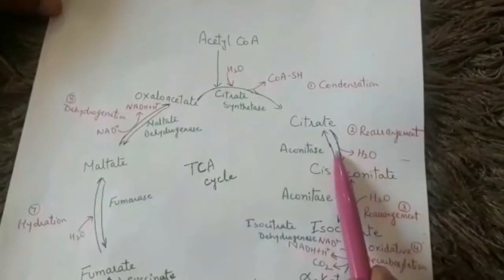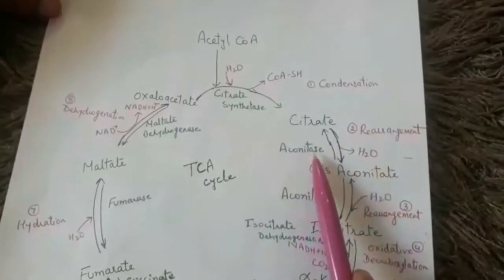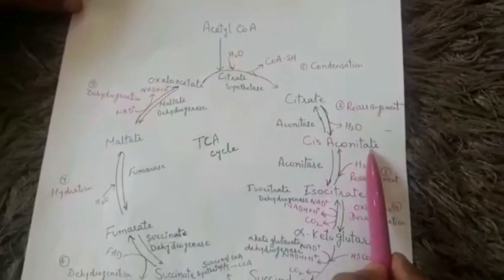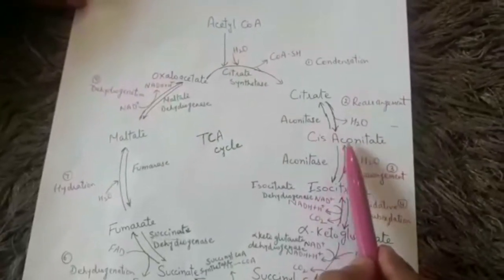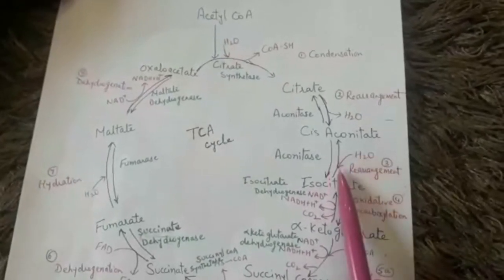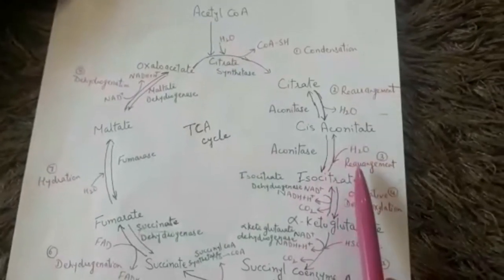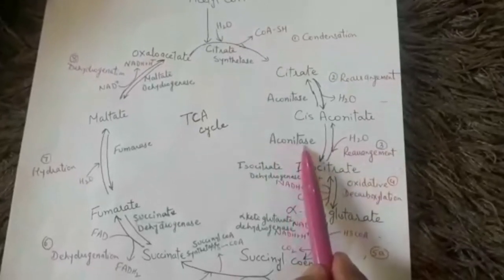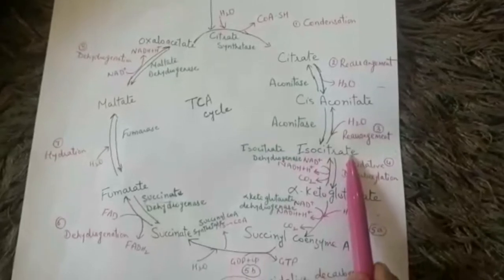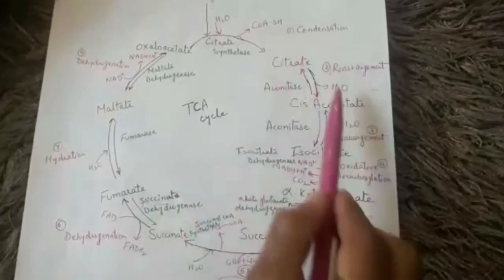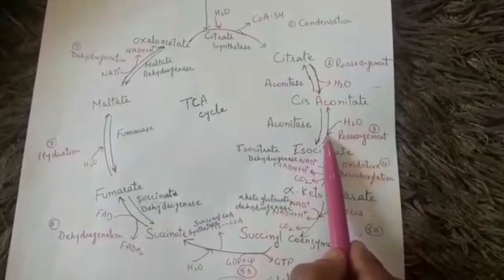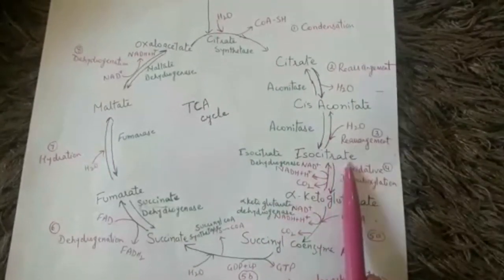The second step is rearrangement. Citrate loses water and undergoes rearrangement of atoms in the presence of the enzyme aconitase to form cis-aconitate. Cis-aconitate again undergoes rearrangement with the addition of a water molecule, catalyzed by the same enzyme aconitase, to form isocitrate.